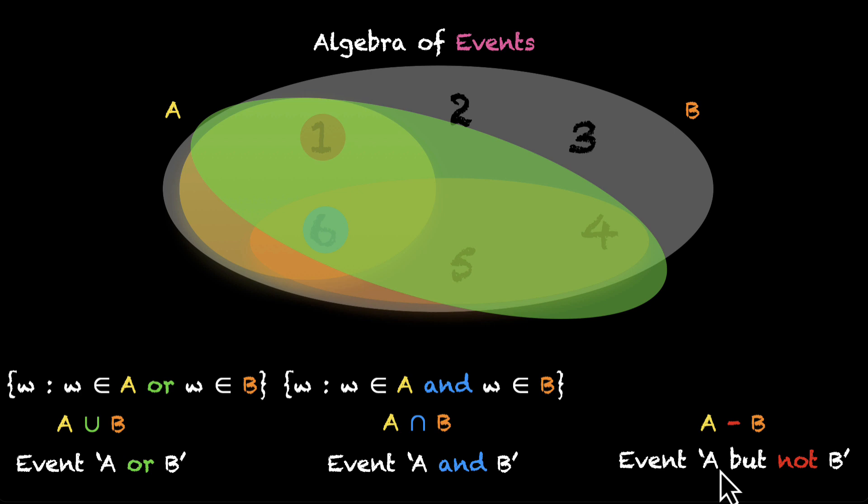And what about the third one? A but not B. Well, this says W belongs to A and W does not belong to B. So, we'll have to be in A and be outside B. And in some textbooks, you'll also see this third event written like this: A intersection B dash.